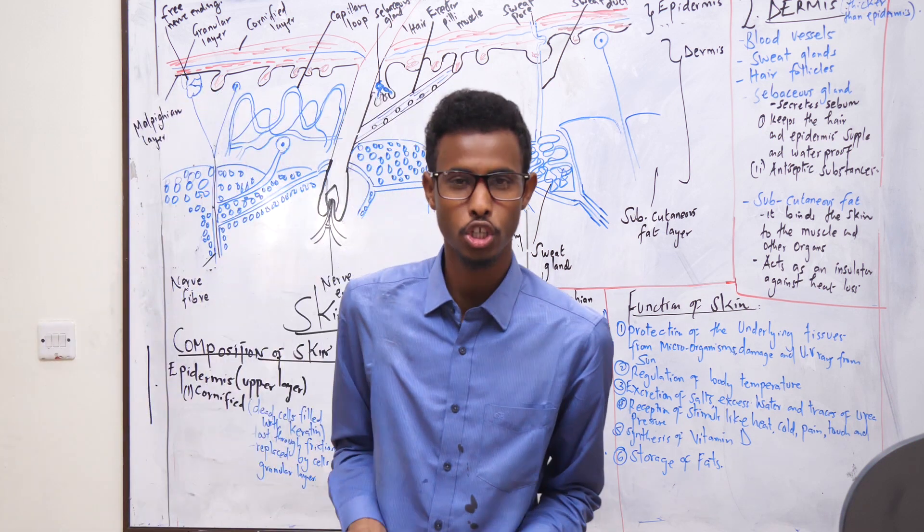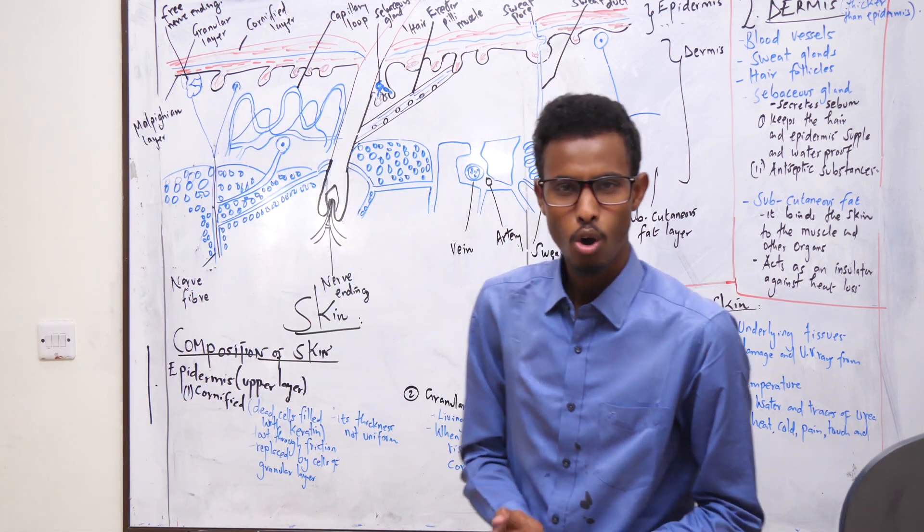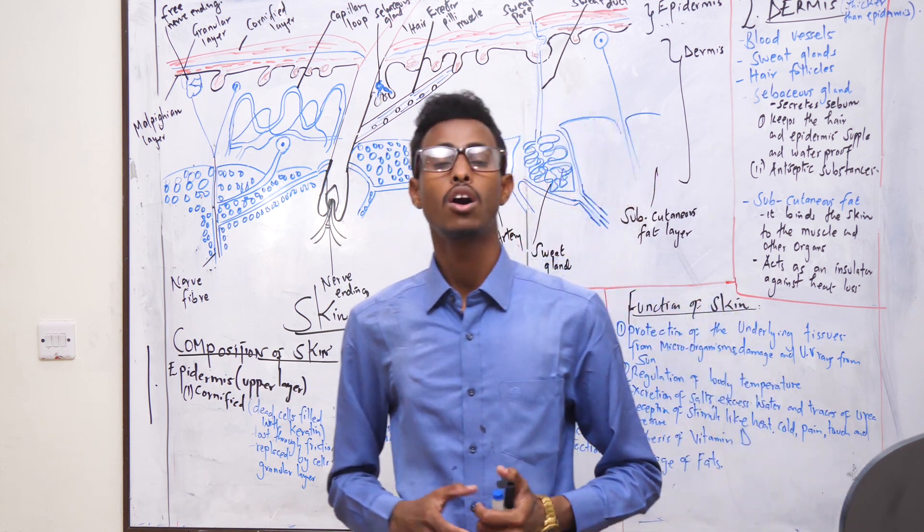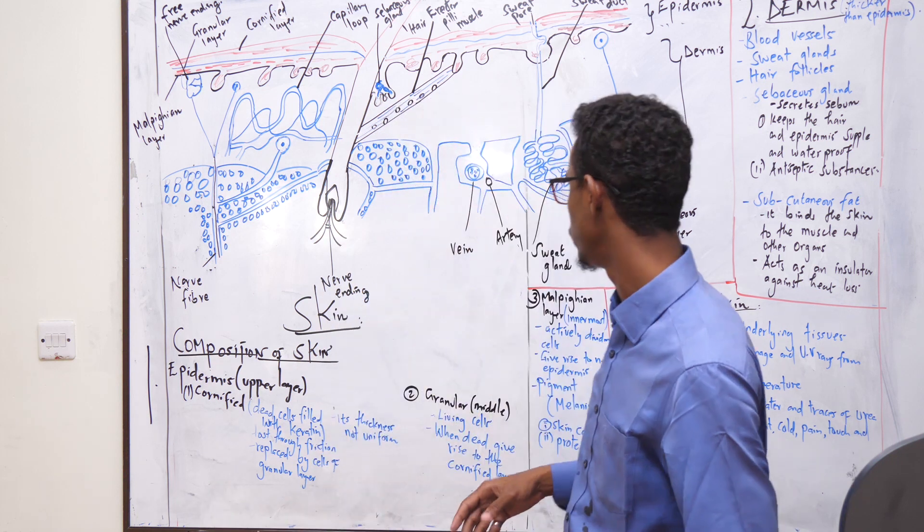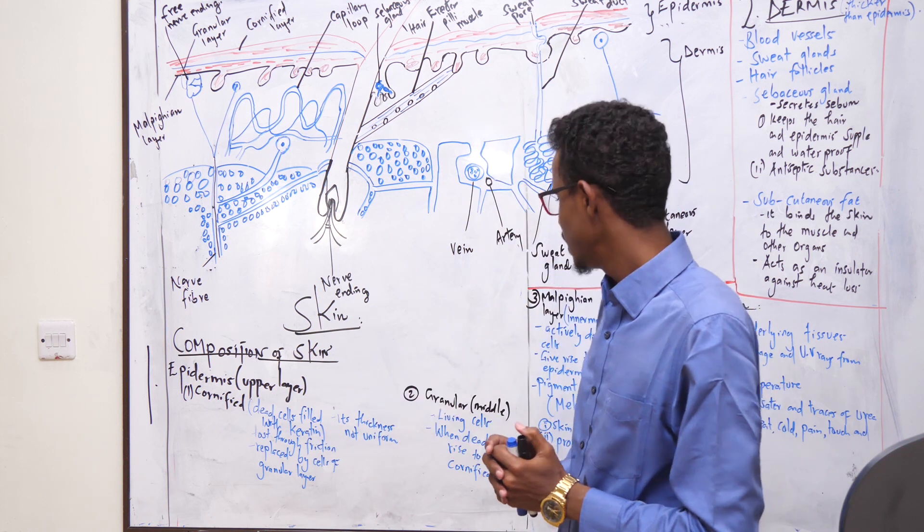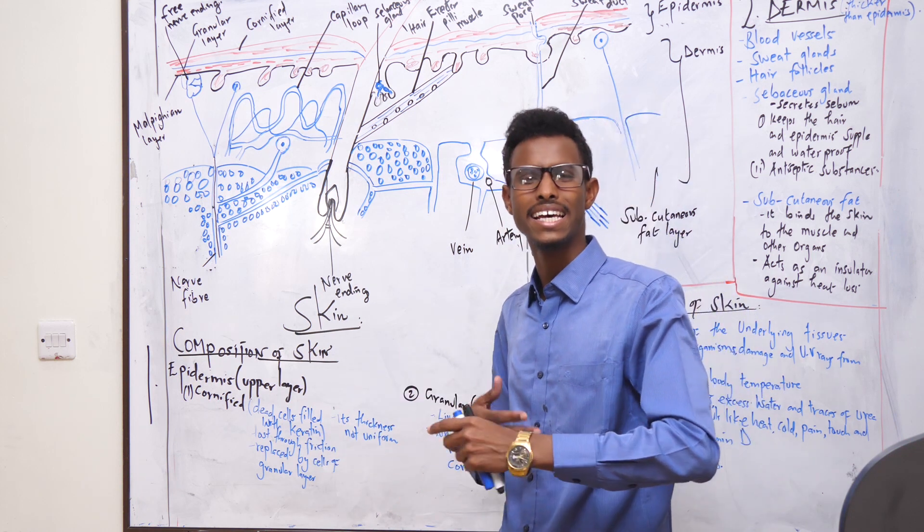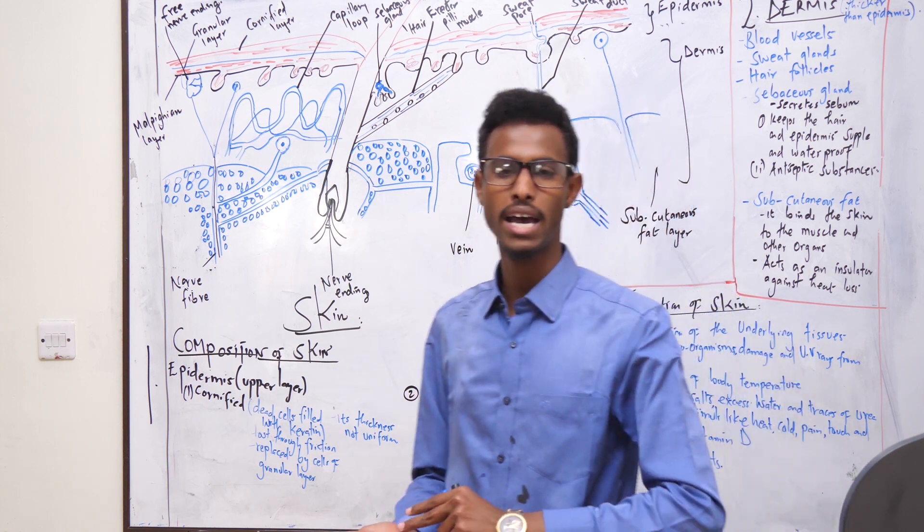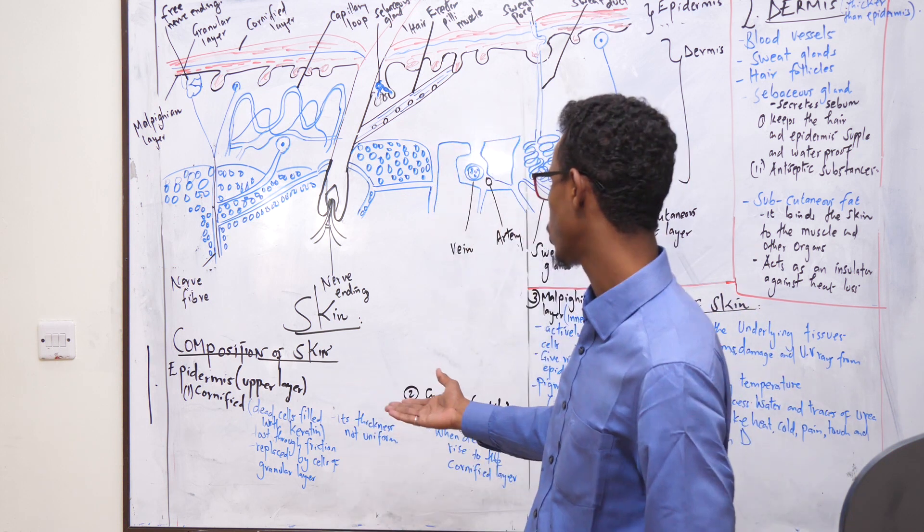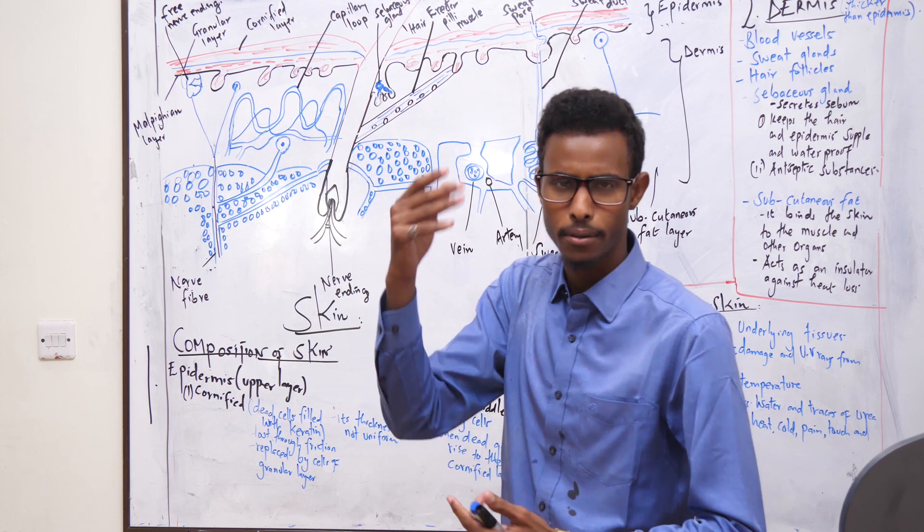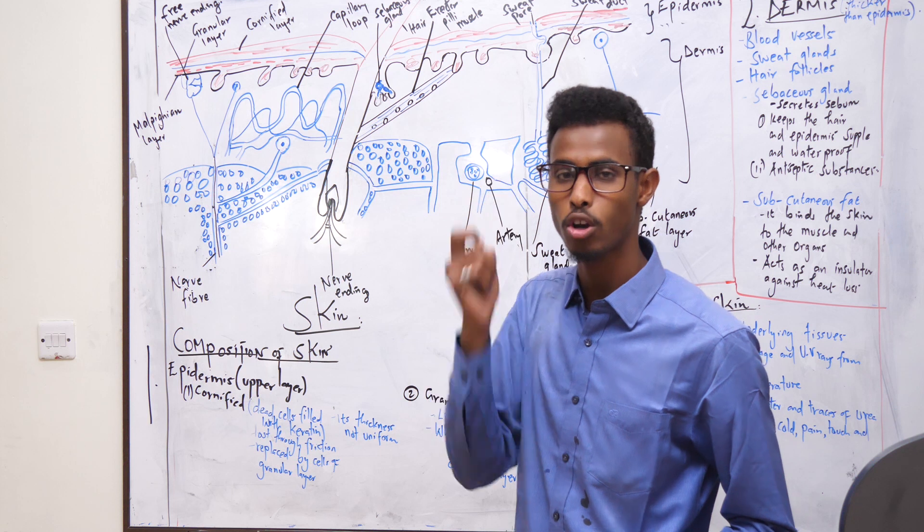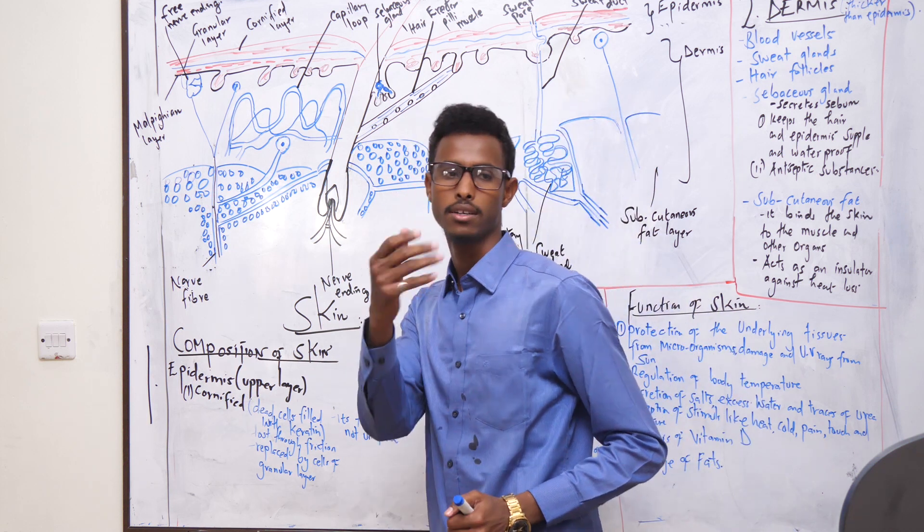What about the uniformity of the thickness of the epidermis across the body surface? The thickness of this cornified layer is not uniform. It is thick in areas of high friction, for example the palms of the arms and the soles of the feet. But in areas with less friction like the eyeballs, they are very thin.